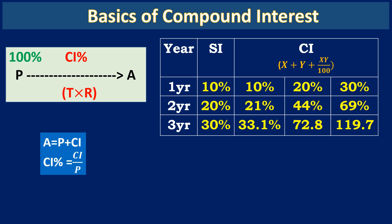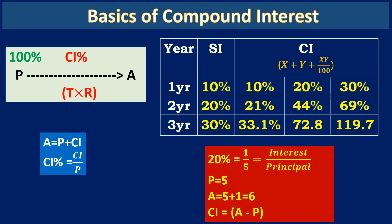Let us assume the annual interest rate is 10% per annum. Using effective percentage calculation, we can find the CI for two years. The compound interest rate for 10% in two years is 21%, and for three years is 33.1%. We can similarly find the 20% and 30% interest rates per annum over two and three years. For example, given the interest rate is 20%, which equals 1/5, the principal is 5 and the CI is 1. The amount at the end of one year is A = 5 + 1 = 6. CI equals the difference between the amount and the principal.